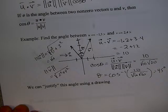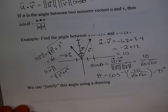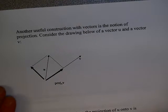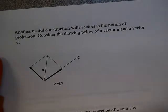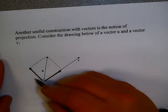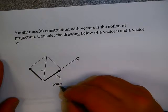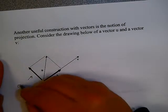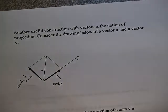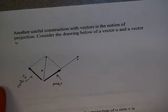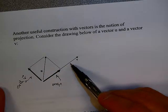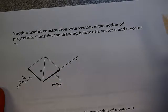Another useful construction with a vector is the notion of projection. Consider a vector u and another vector v. The vector u is the sum of two components: one called the projection of u onto v, and the other called the orthogonal projection of u onto v. Your book may call these the component of u parallel to v and the component of u perpendicular to v, but they mean the same thing.